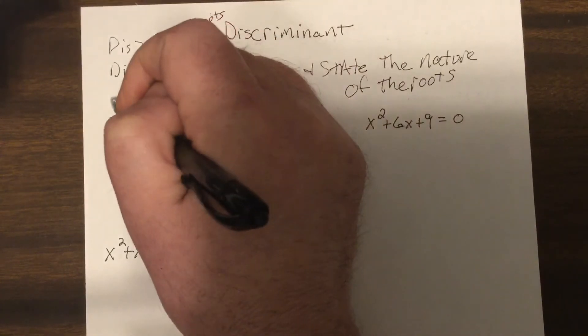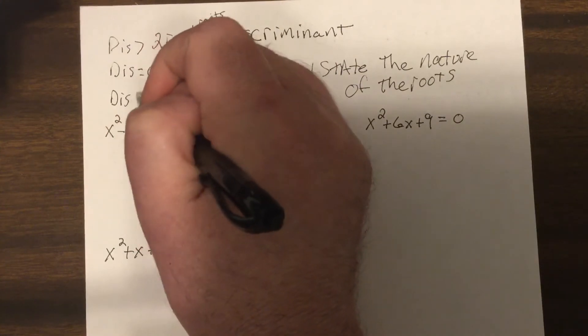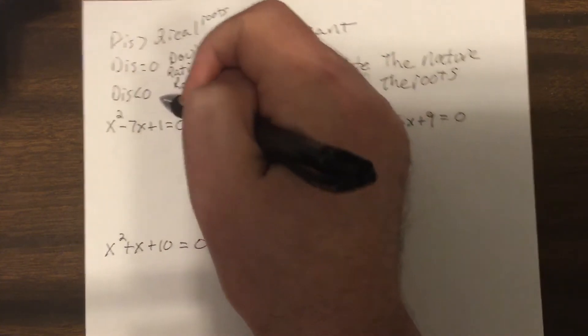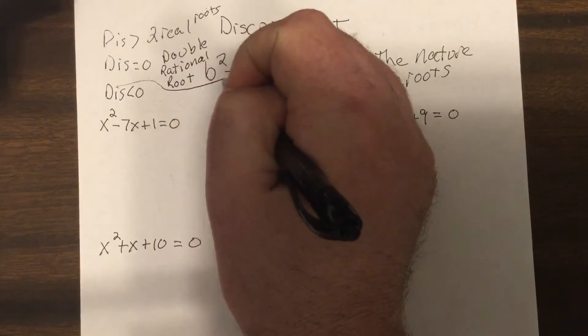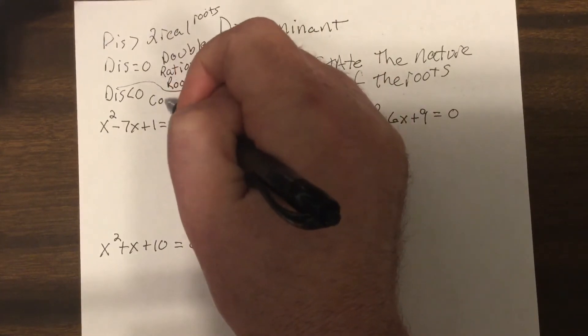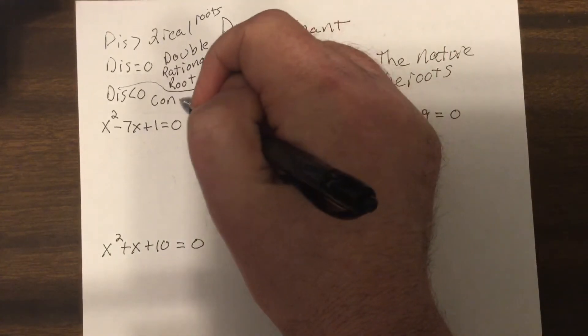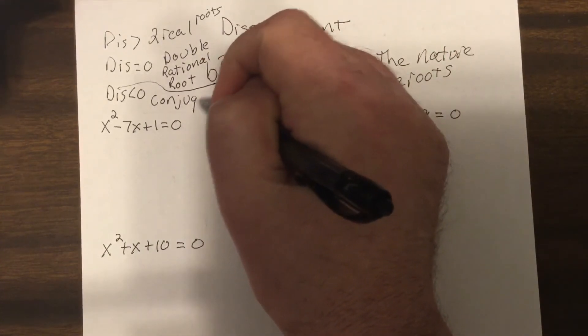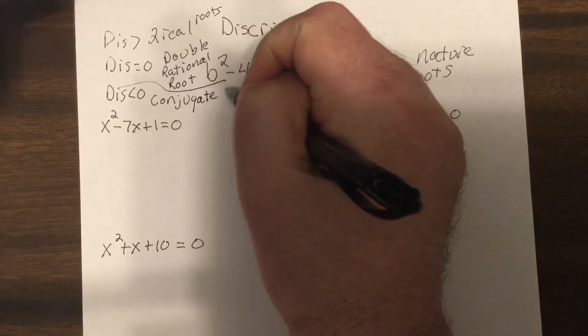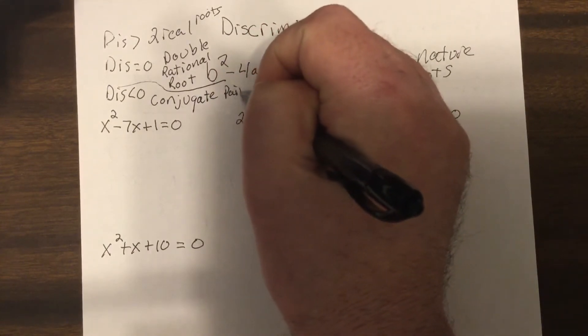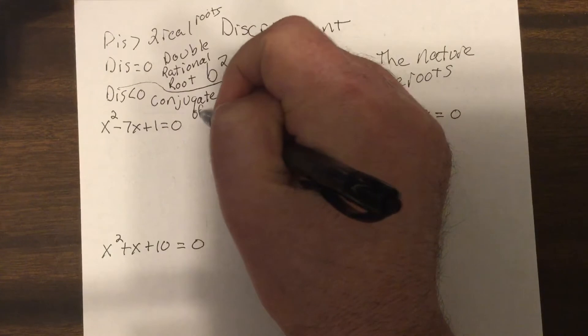And if it's less than zero, it's a conjugate pair, meaning if one is two plus four i, the other one's two minus four i, so a conjugate pair of imaginary roots.